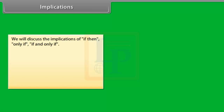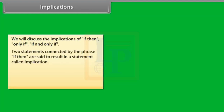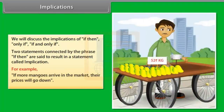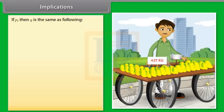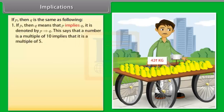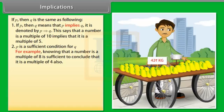Implications. We will discuss implications involving: if-then, only if, and if-and-only-if. Two statements connected by the phrase 'if-then' result in a statement called an implication. For example, 'If more mangoes arrive in the market, their prices will go down.' If P then Q means P implies Q, denoted P → Q. For example, a number is a multiple of 10 implies it is a multiple of 5. P is a sufficient condition for Q — knowing a number is a multiple of 8 is sufficient to conclude it is a multiple of 4.